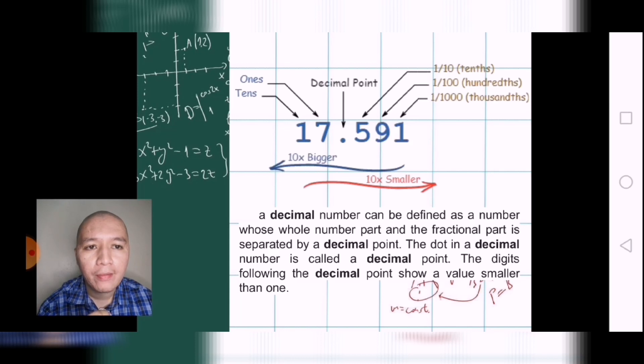Next we have the decimal. Here in our picture we can see that the decimal point divides the numbers in two directions. Leftwards, we will have the numbers ten times bigger: ones, tens, hundreds, thousands, millions, and so forth.